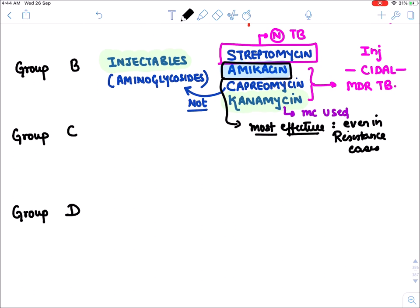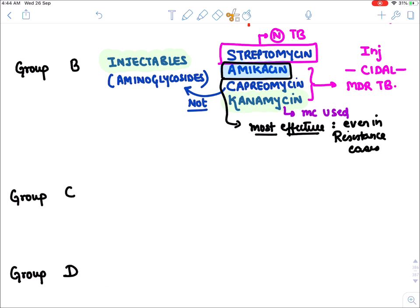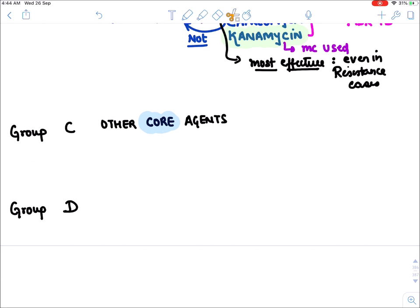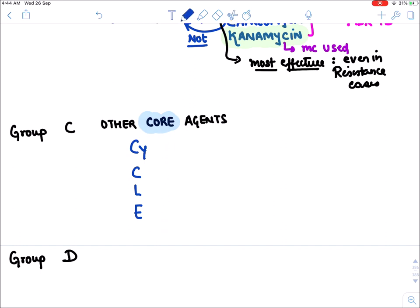Group C is known as 'other core agents.' Using the mnemonic CYCLE: C for cycloserine, C for clofazimine (also a drug for leprosy), L for linezolid, and E for ethionamide.